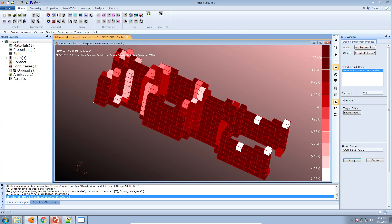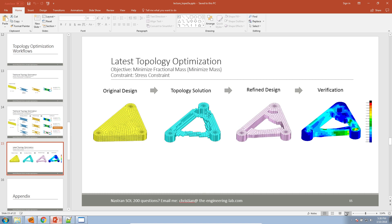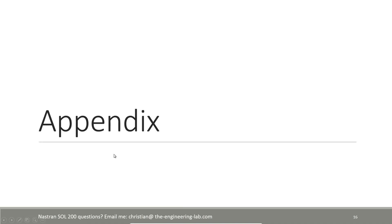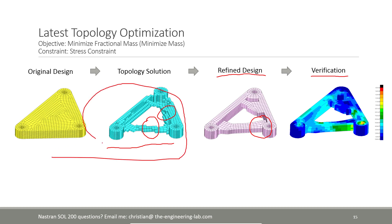This is my topology solution — the starting point for this concept. You take this concept and refine it, then perform a verification analysis to make sure the refined design meets your structural requirements for stress, displacement, stiffness, natural frequencies, and so on. The goal of this video is to show you how to set up a topology optimization. After this, there's still more work to be done. The topology solution is very coarse and not a good mesh to perform an analysis on — you have to smooth out the elements and then perform a verification analysis.